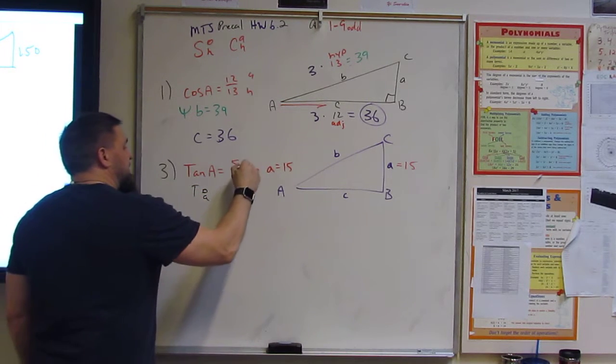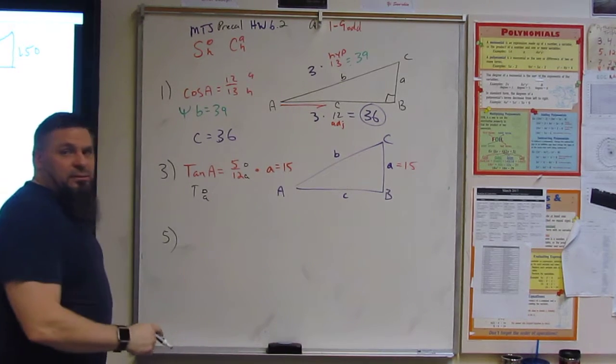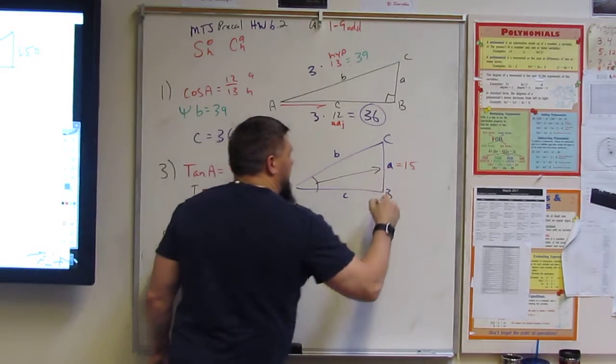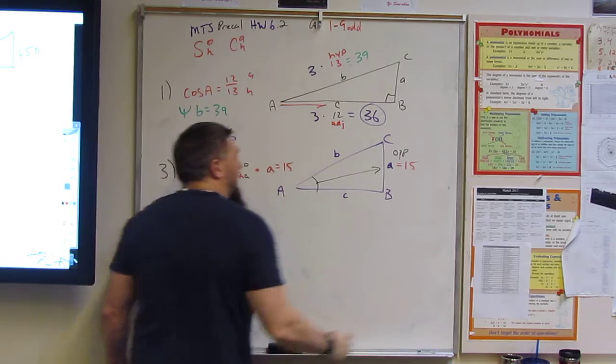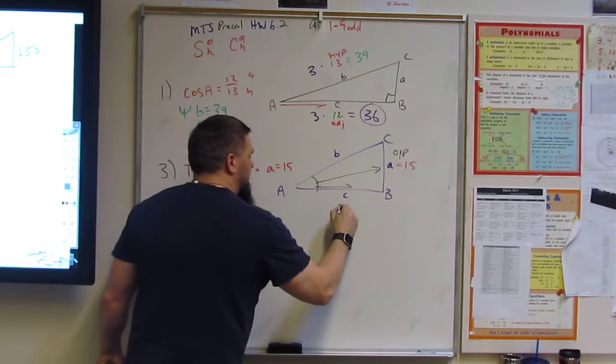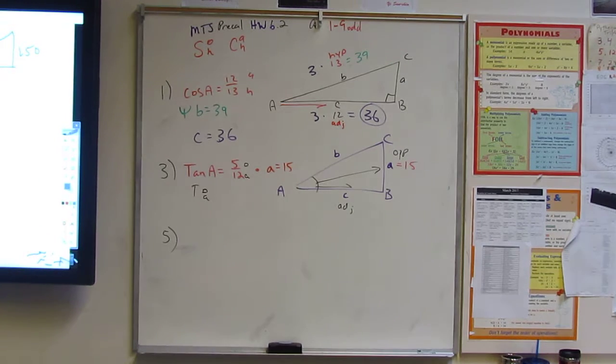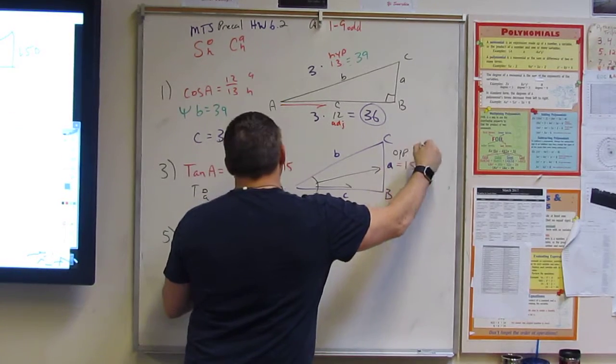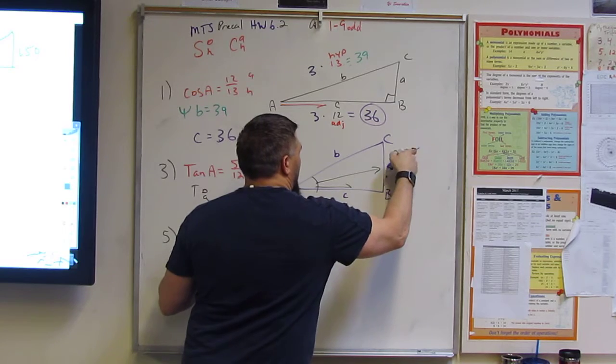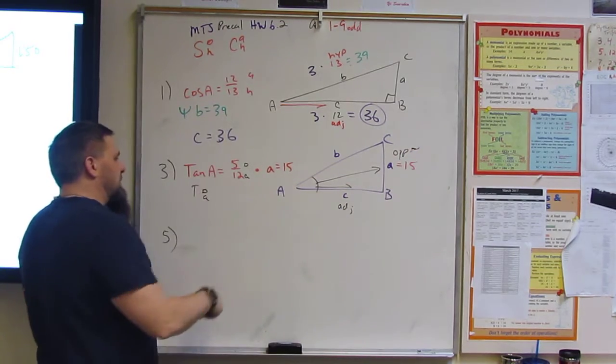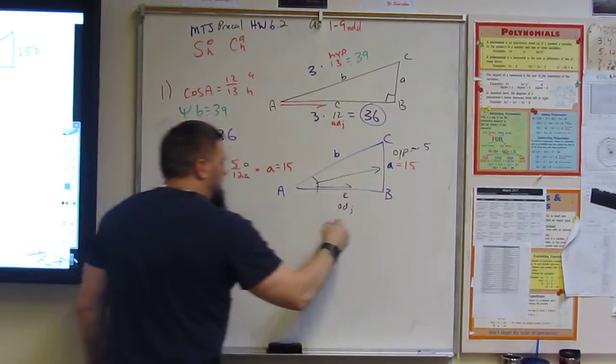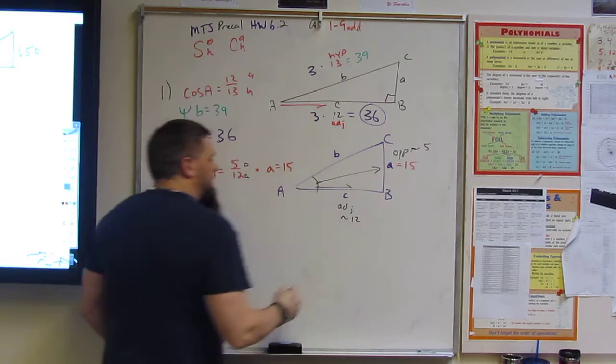So that means this is opposite and this is adjacent, right? So A is this angle, right? So opposite is going to be this guy, OPP. And the adjacent is going to be this guy. And so we just have to figure out, the opposite is going to equal or be similar to 5, right? And the adjacent is going to be similar to 12, right?